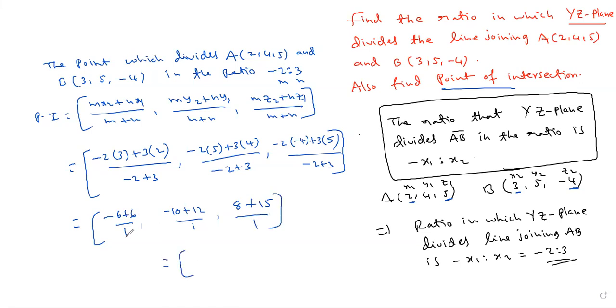Finally which is equal to 0 by 1 which is 0, 2 by 1 which is 2, 23 by 1 which is 23. This is the point, what is point of intersection: 0, 2, 23. What is the ratio? Minus 2 is to 3. So very important model, practice well.